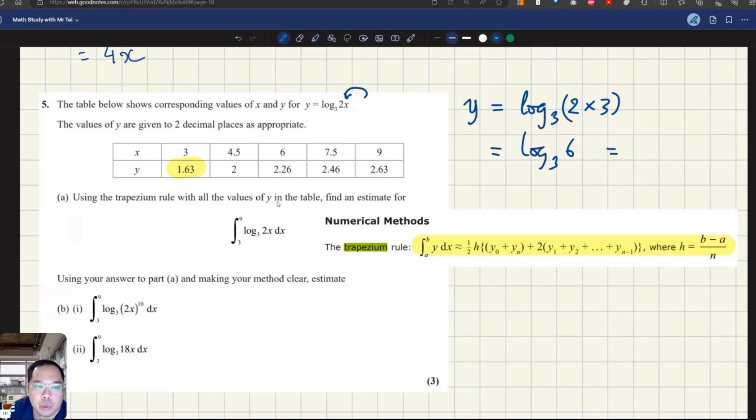To start with the formula of the trapezium rule, we need to determine the parameters b, a, and n. From this integration, the value 3 here is a, the value 9 is b, and the value n is the number of values of x and y given in the table.